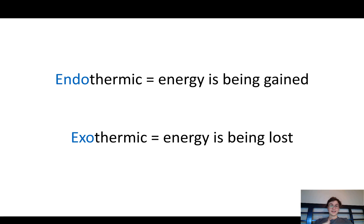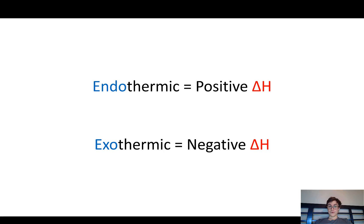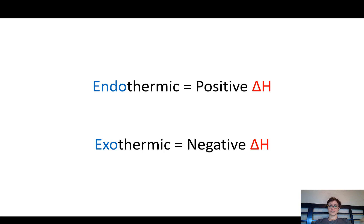Bringing it back: in an endothermic reaction we are gaining energy, and in an exothermic reaction we're losing energy. Therefore, in an endothermic reaction we have a positive delta H, and in an exothermic reaction we have a negative delta H — the chemicals are losing their energy and giving it out.